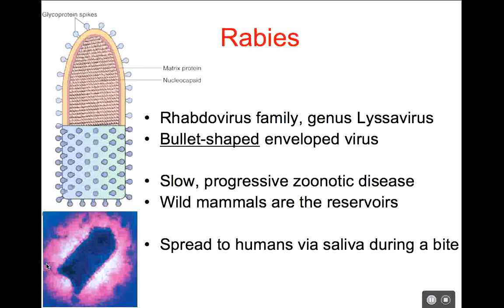This virus is a zoonotic virus. It is found in wild mammals, and it's passed to humans via a bite — the saliva from the bite will pass it to humans. We find rabies in lots of different wild mammals, including skunks, bats, foxes, coyotes, bobcats, raccoons, etc. It can be spread to humans via a bite.